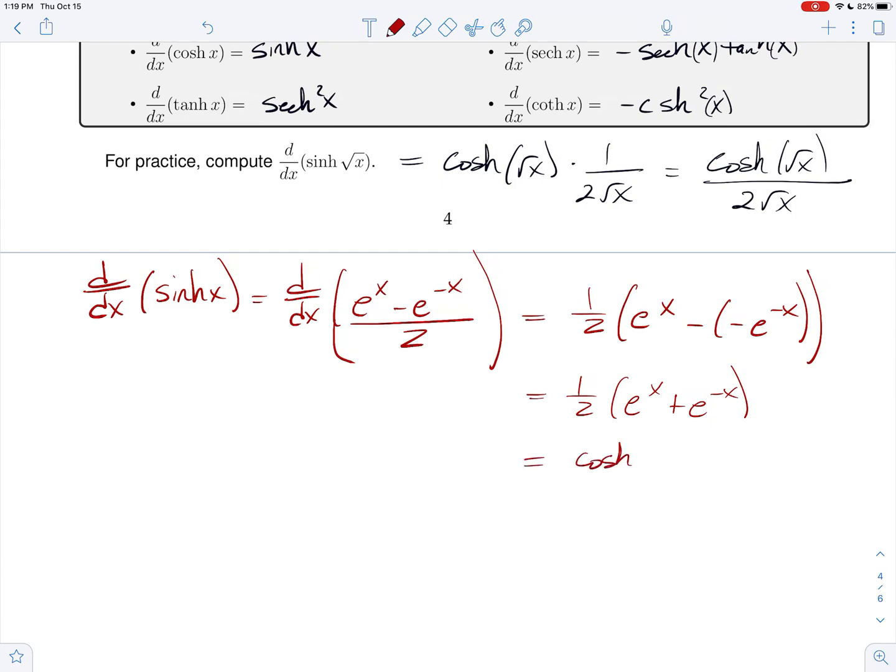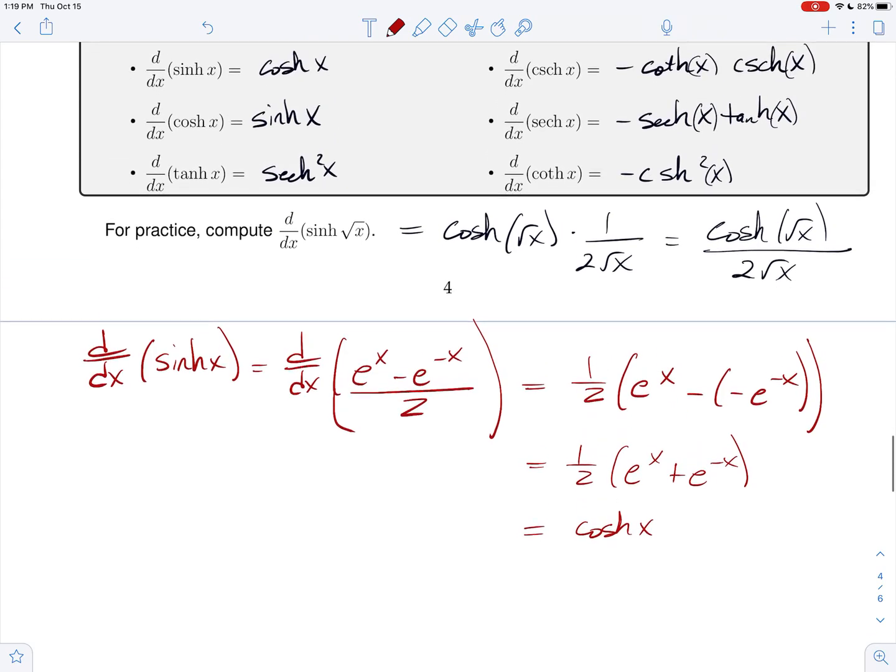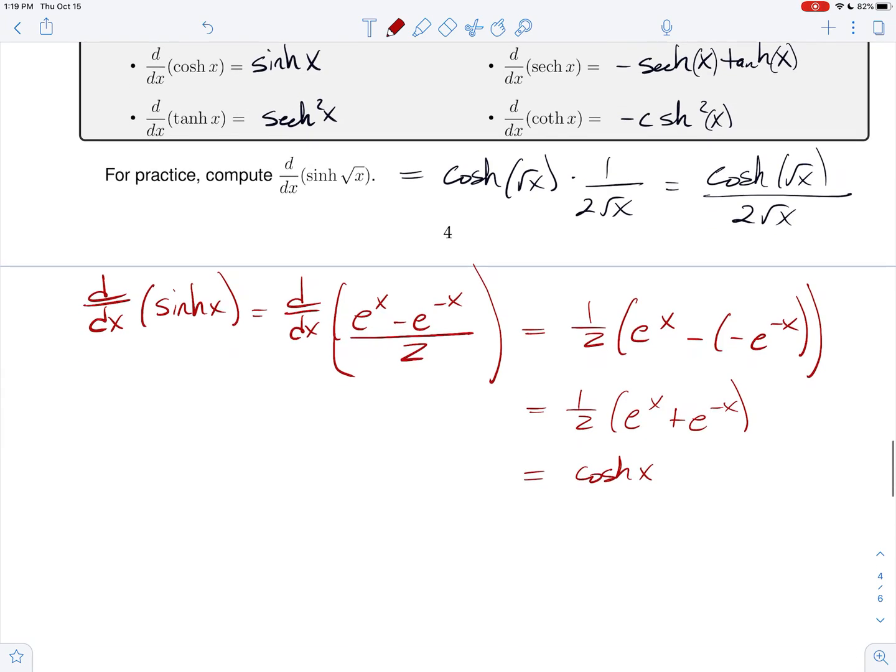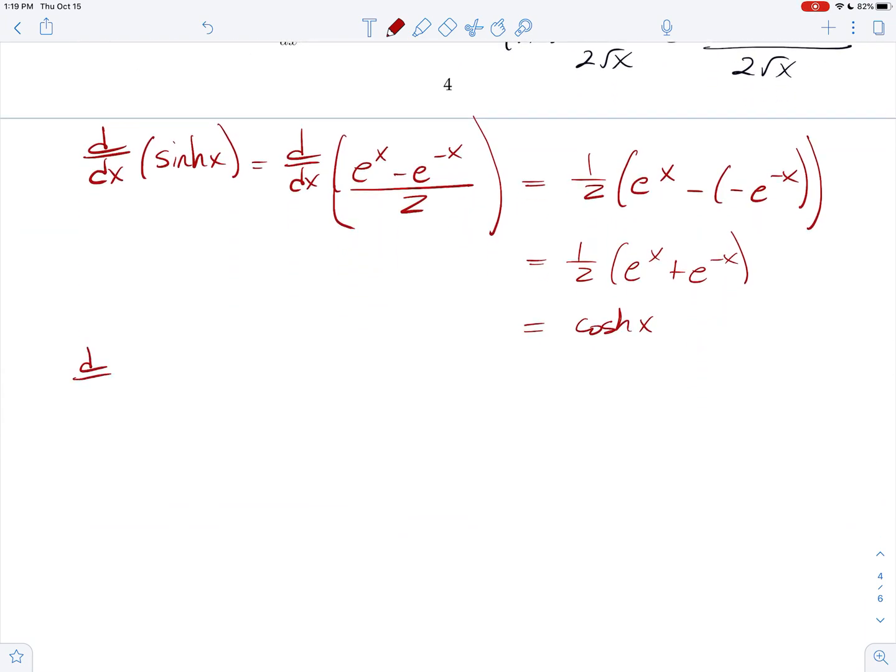All right, and now when we come to the derivative of the cosh of x, that's the same—let's put a little line there—that's the same thing as the derivative of e to the x plus e to the minus x all over 2.